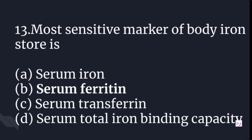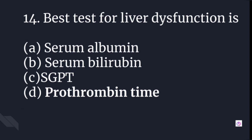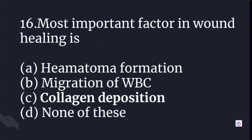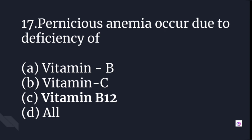The most sensitive marker of body iron stores is serum ferritin. The best test for liver dysfunction is prothrombin time. The best investigation for optic nerve damage is perimetry. The most important factor in wound healing is collagen deposition. Pernicious anemia occurs due to the deficiency of Vitamin B12.